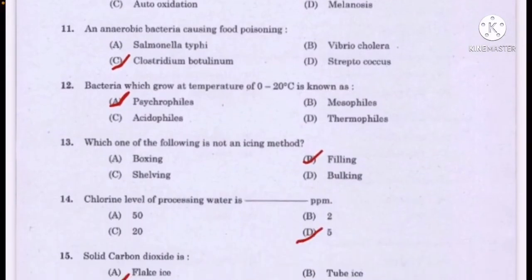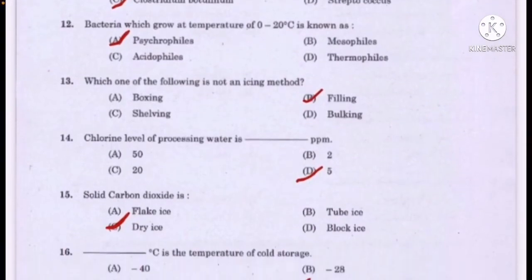Bacteria which grow at a temperature of 0 to 20 degrees Celsius is known as — option A: psychrophiles. Which one of the following is not an icing method — correct answer option B: filling.